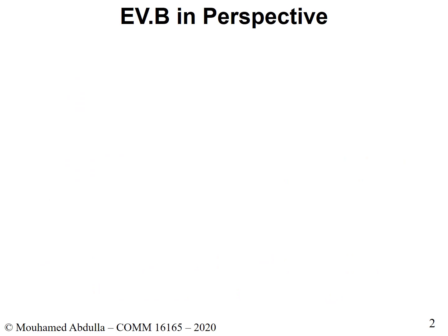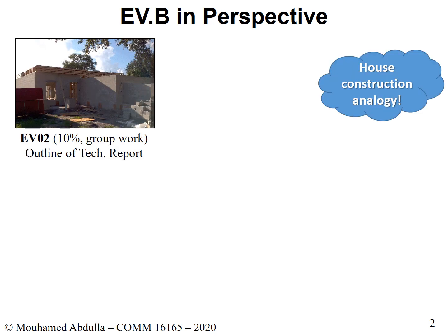To give you perspective on what is required for EVB, let's see how it's linked to previous deliverables in the semester. Initially, we worked on EV2, where the objective was to come up with an outline of a specific case study. You formed a group, selected a case study, and created an outline — a skeleton where every student proposed a solution with three sub-criteria. I'm using a house analogy here, showing the foundation and walls being built, to better comprehend what we're doing.